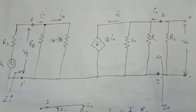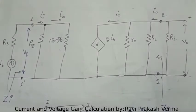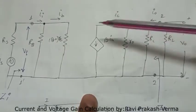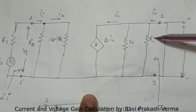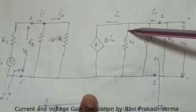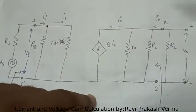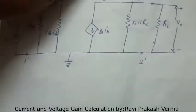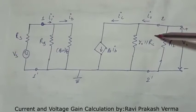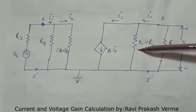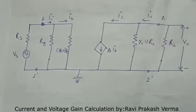Hello guys, this is Ravi. In today's lecture we are going to find out the current gain and voltage gain for this re model of the effects by circuit. In this circuit we will simplify a little bit. In the output section, R naught and RC are in parallel, so we can write this in a single form and the whole output circuit will become simpler.